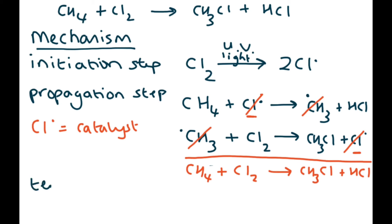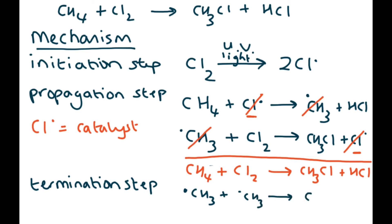The final step is the termination step, and there are three possible termination steps. This is where two radicals react together. For example, a CH₃ radical reacting with another CH₃ radical makes ethane — no radical is produced.